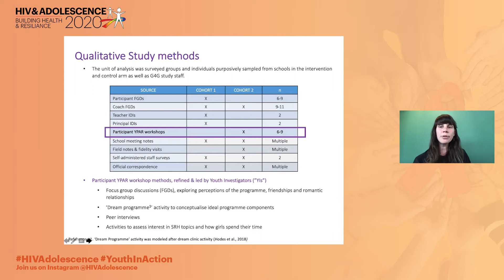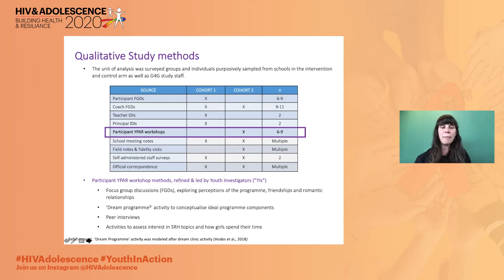We used a number of traditional and non-traditional qualitative study methods to evaluate acceptability and feasibility. These study methods included multiple stakeholders in the program. Today, we'll focus on the adolescent participants and on participatory workshops that were led by their peers. These workshops included focus group discussions, a dream program activity, peer interviews, and activities to assess girls' interest in different SRH topics.